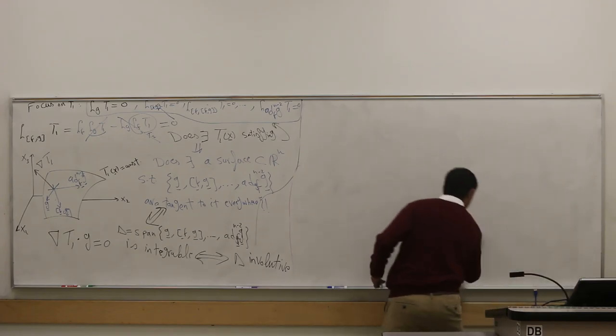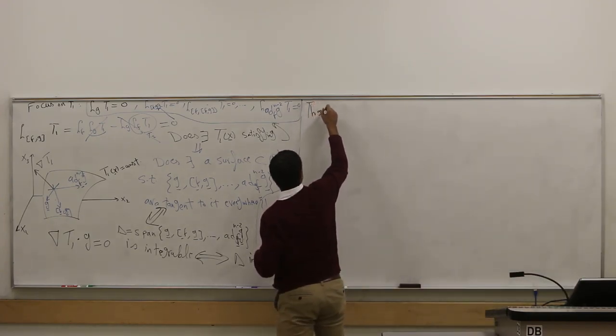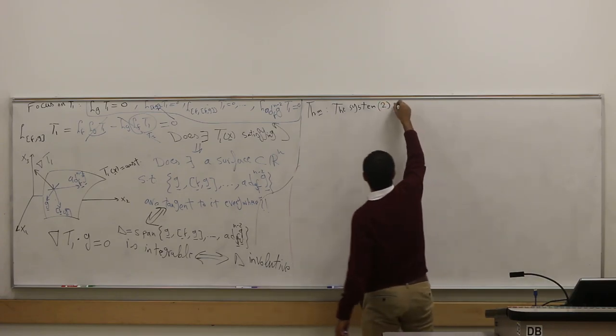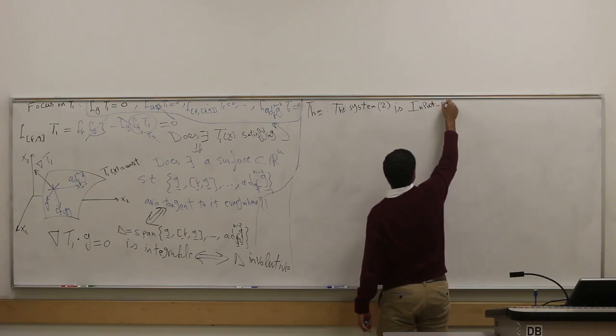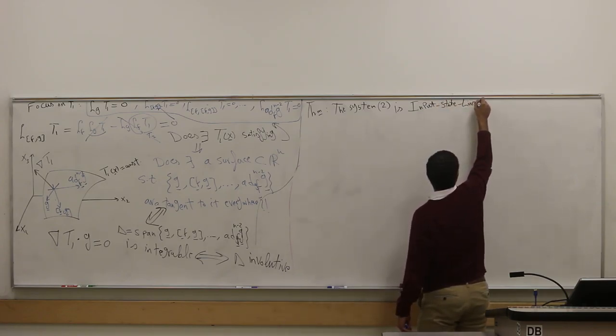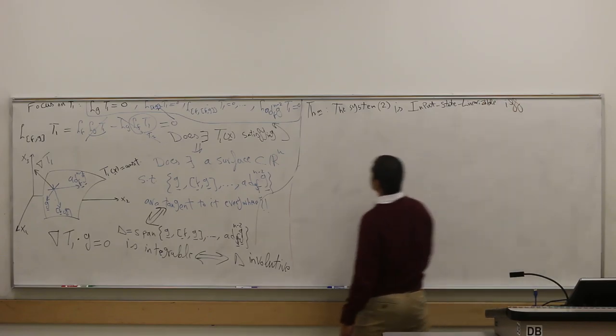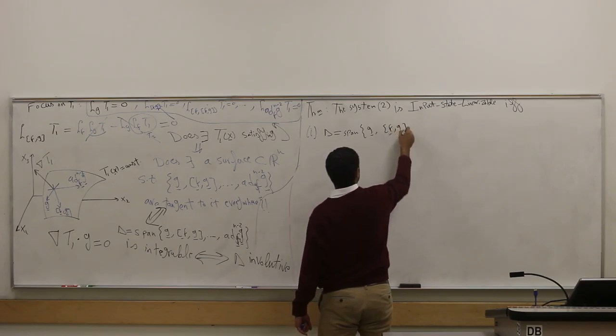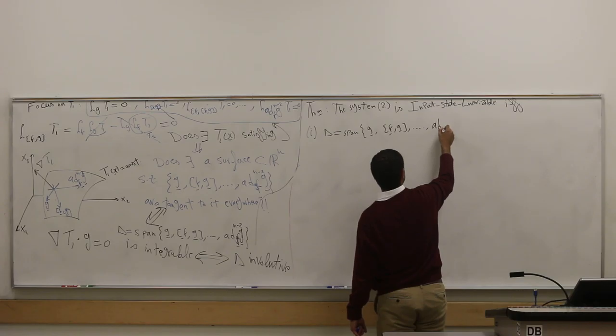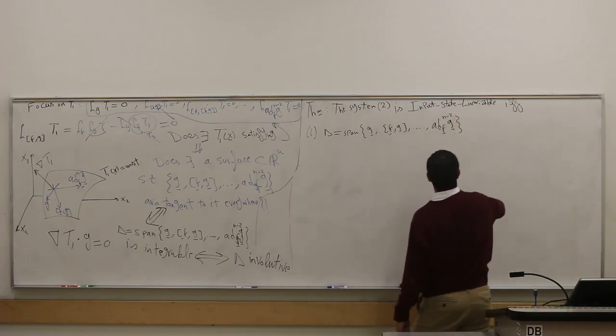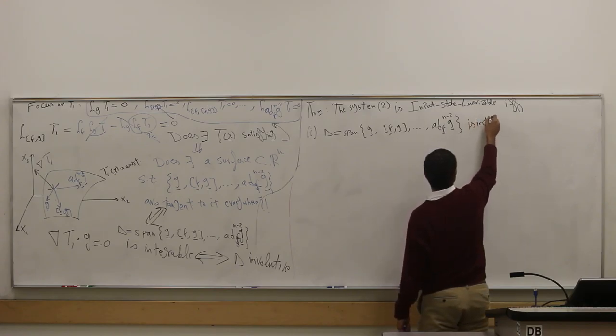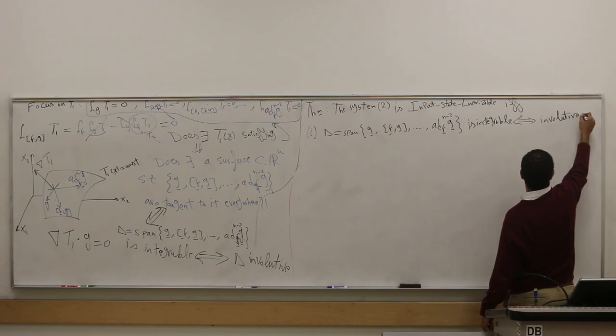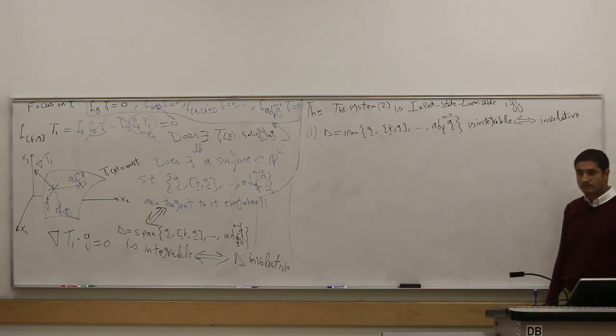So now we can have a theorem. The system with single input is input-state linearizable if and only if delta, that is span of your g, [f,g], and all these vectors up to ad^(n-2)_f g. This guy should be, must be integrable. And integrability is just equivalent to involutive. So I need to check that this guy is involutive. Any questions so far?